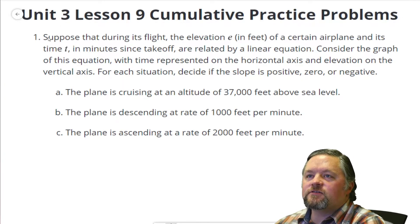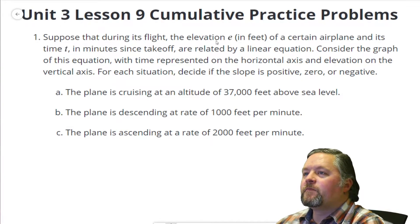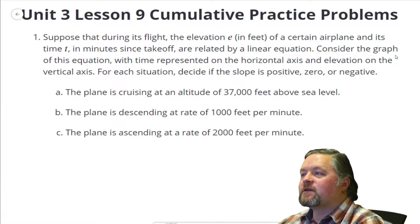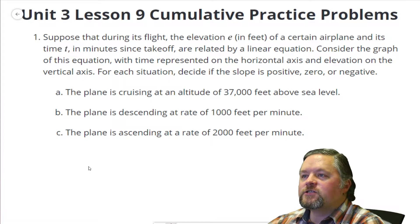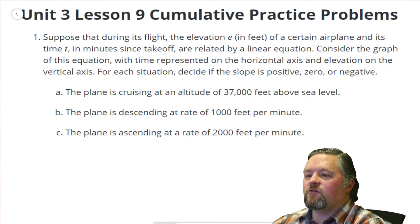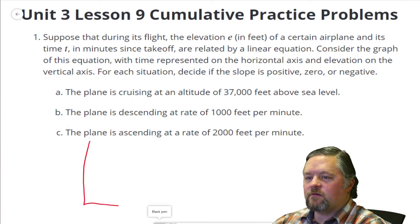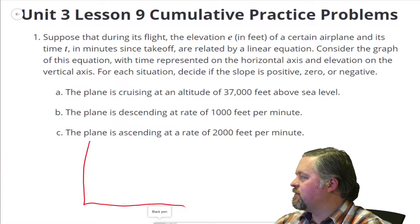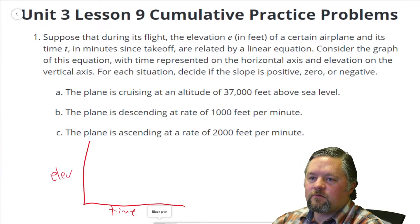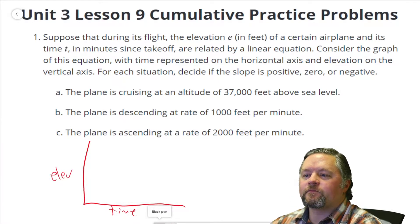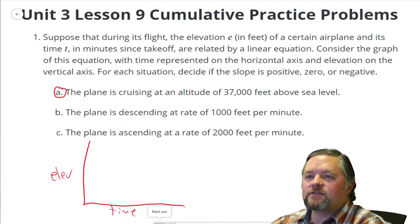Okay, our first question here says suppose that during a long flight, the elevation in feet of a certain airplane and its time in minutes since takeoff are related by a linear equation. Consider the graph of this equation, with time represented on the horizontal axis and elevation on the vertical axis. For each situation, decide if the slope is positive, zero, or negative. So I'm just going to throw a quick graph here, and it said time there, elevation there. What is this going to look like? I've already got red, so I'll make this one red.